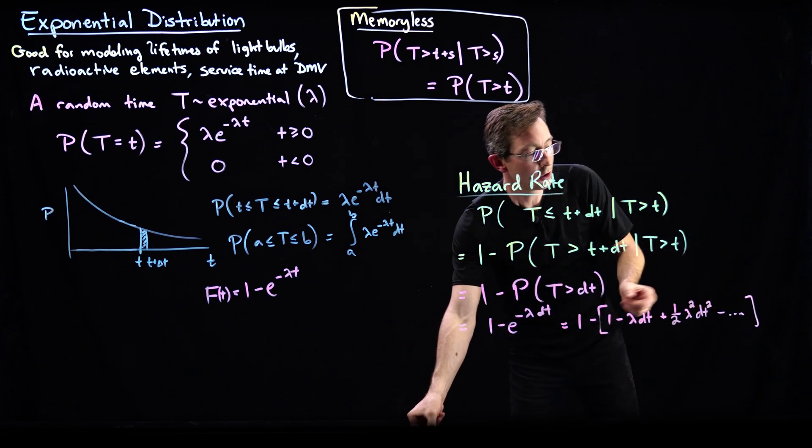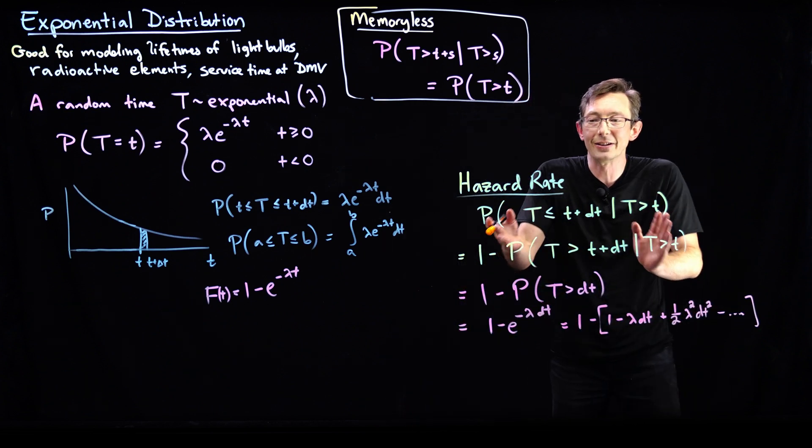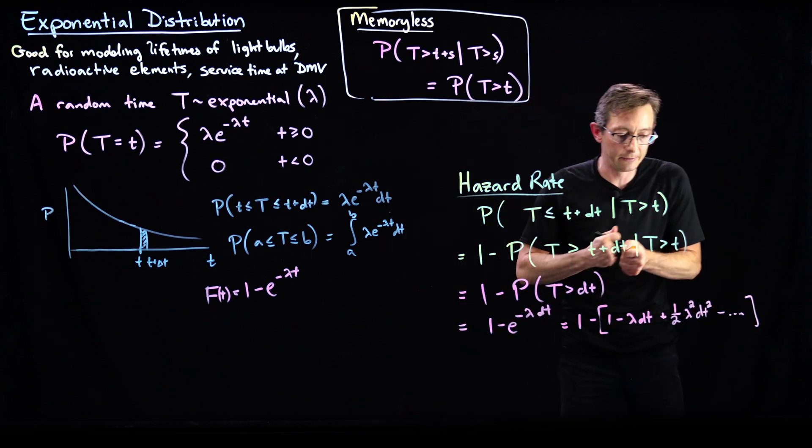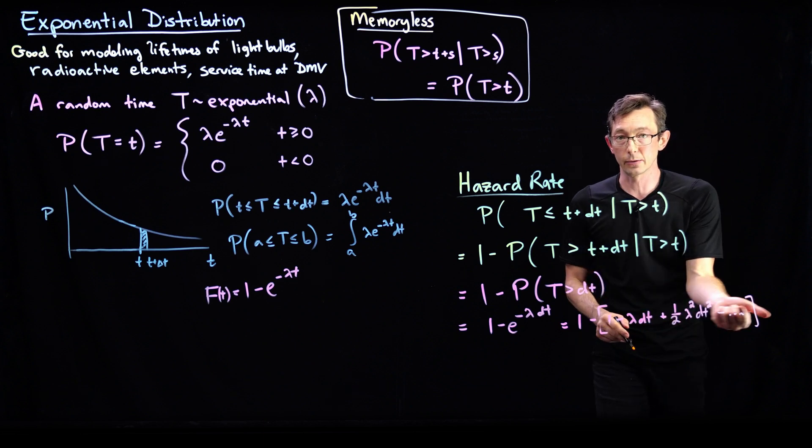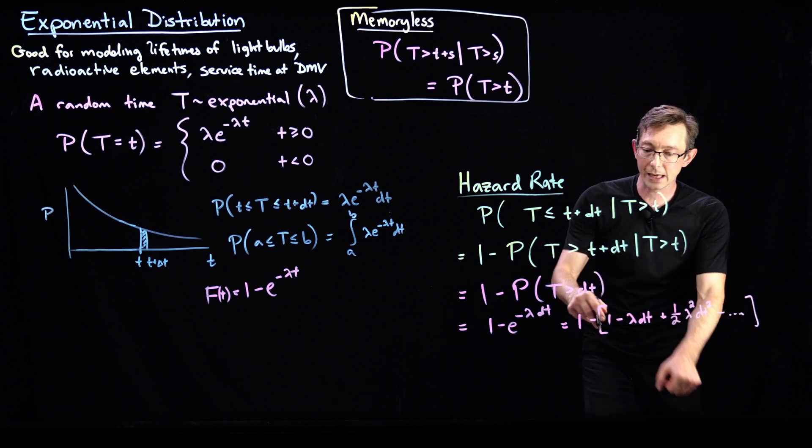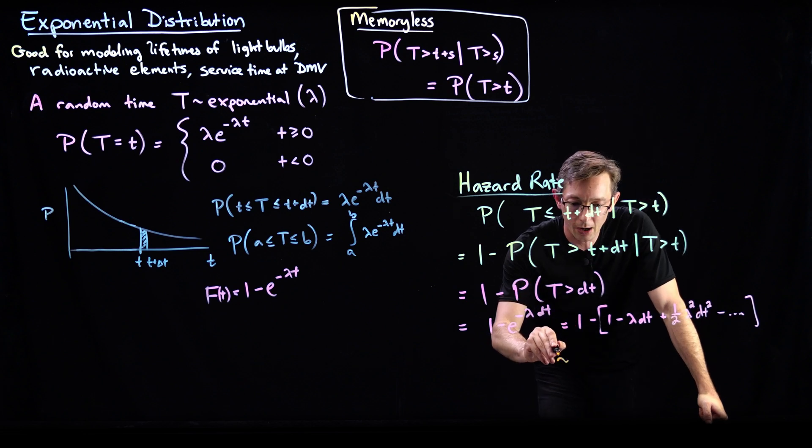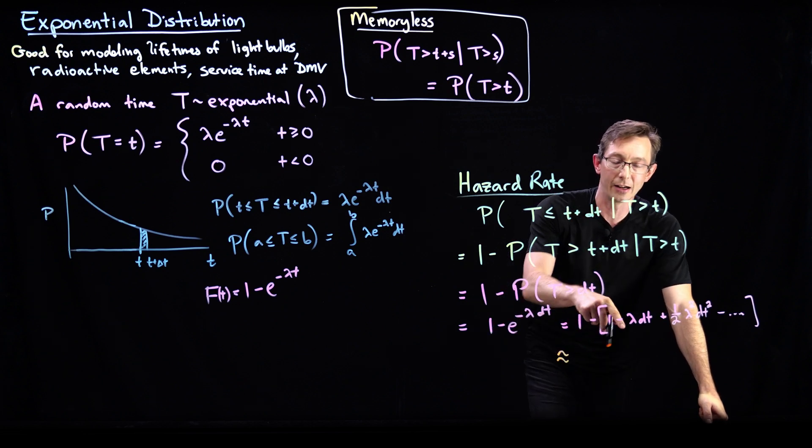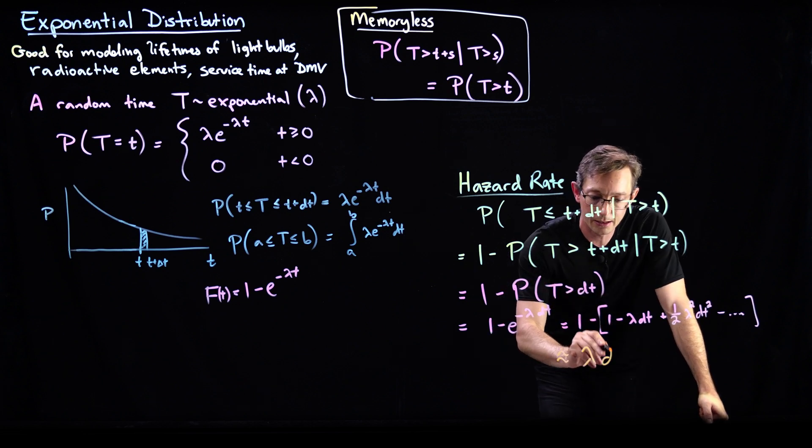But we are assuming that dt is small. This is kind of an infinitesimal dt. And so all of these terms are really, really small. And these are the leading order terms. The 1s cancel, and this is approximately equal to negative negative is positive, lambda dt.